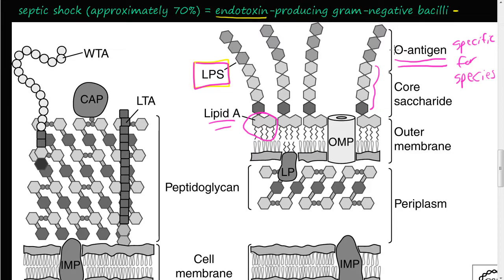The O-antigen is specific for different species. This LPS — the lipopolysaccharide structure — is the endotoxin responsible for producing septic shock. Although gram-negative bacteria are usually the source, gram-positive and fungal analogous molecules can also elicit this septic shock pathway.